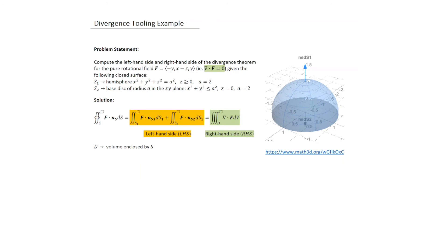Let's start looking at some tooling examples applying the Divergence Theorem, just to understand the calculation procedure. There's a demo on the side you can play with to understand how it can be utilized. The problem statement is to compute the left-hand side and right-hand side of the Divergence Theorem for the pure rotational field, which is given as shown.